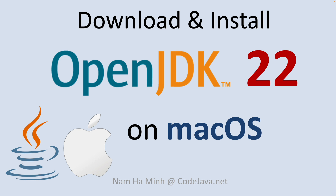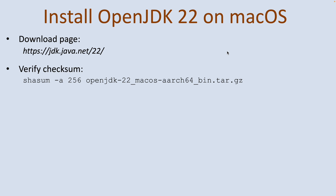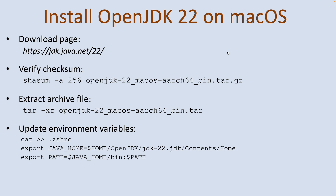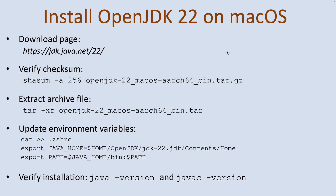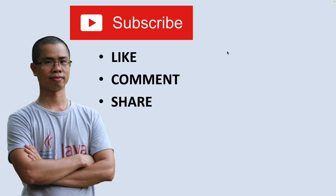Let me sum up the key steps: first, download the binary distribution of OpenJDK from its official download page at the URL shown; then verify the checksum of the downloaded file using the shasum command; extract the archive file using the tar command; update environment variables by creating the shell resource file .zshrc and adding two export entries as shown; and finally verify the installation using java -version and javac -version. I hope you found this video helpful — please subscribe, like, comment, and share. Thanks for watching.